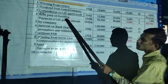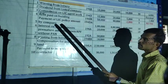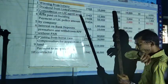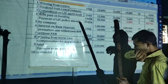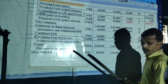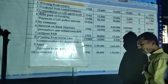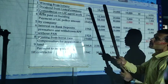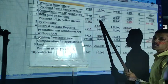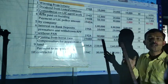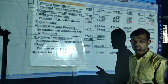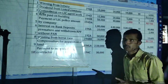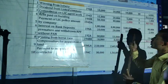Rent paid on building — paid by individual. Under section 194I, up to 50,000 per month — no TDS. In the problem it is 48,000 per month, so no TDS.